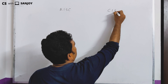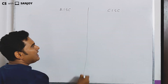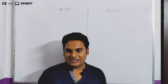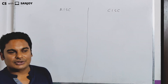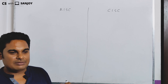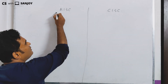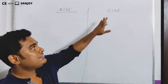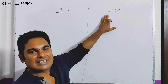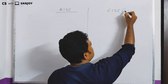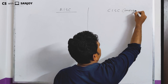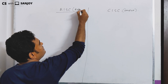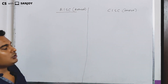RISC and CISC architecture — so we are going to discuss the comparative factors we are going to study. We are going to discuss RISC architecture. So, this is what is Complex Instruction Set Computer, and this is what is Reduced Instruction Set Computer.